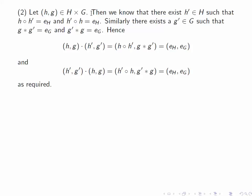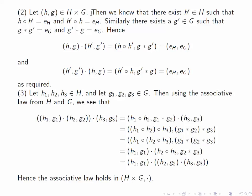Finally, we need to verify the associativity axiom. So for this, we have to pick three pairs in H cross G. Let h₁, h₂, h₃ be elements of H and g₁, g₂, g₃ be elements of G.